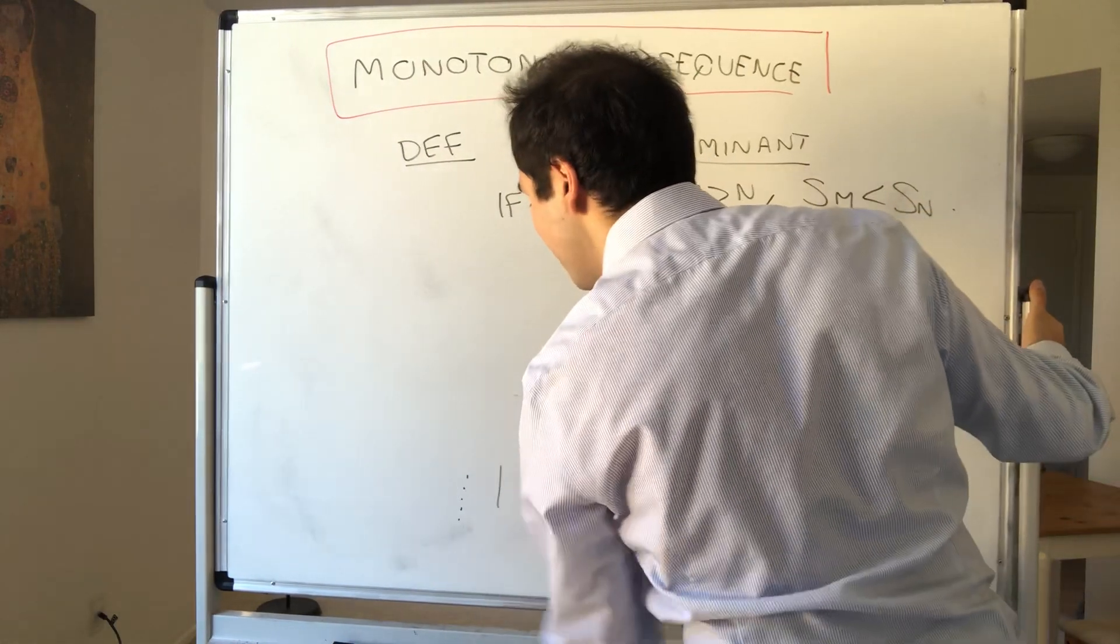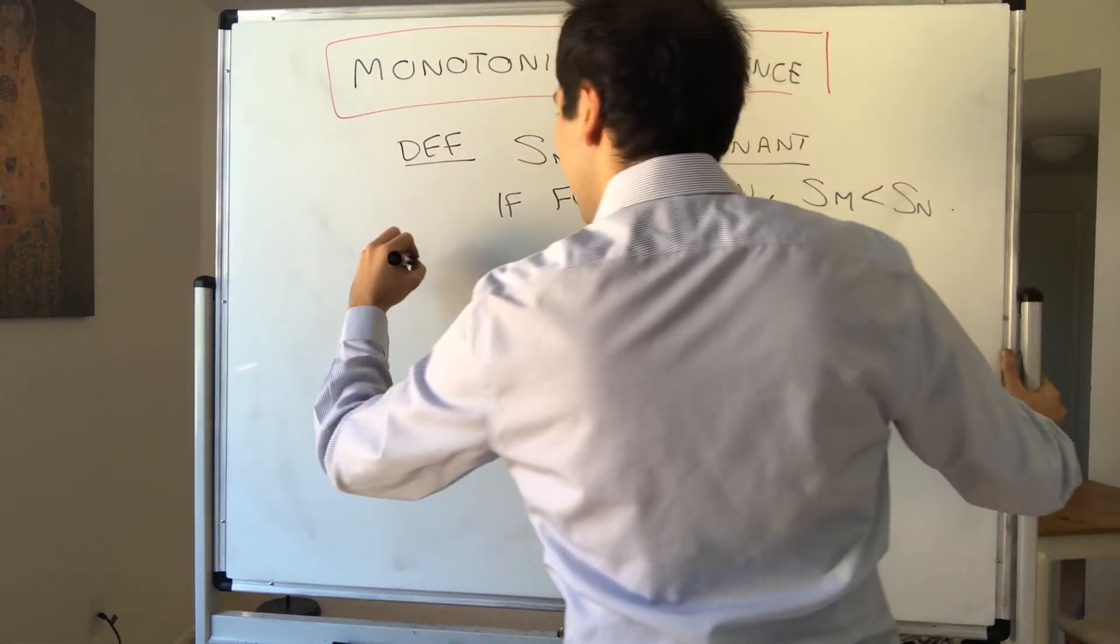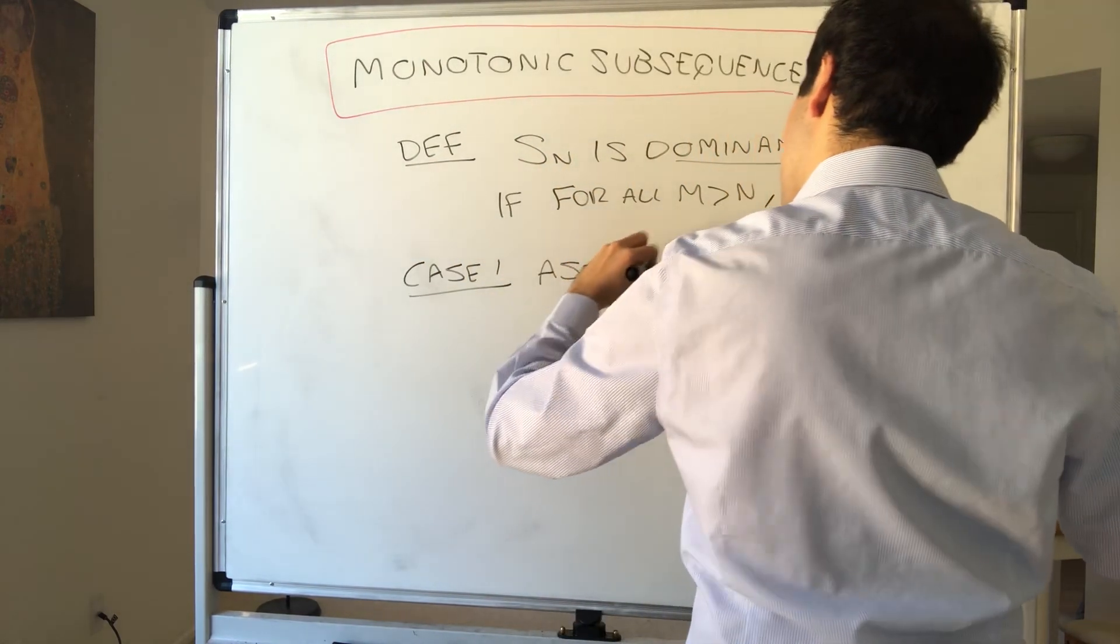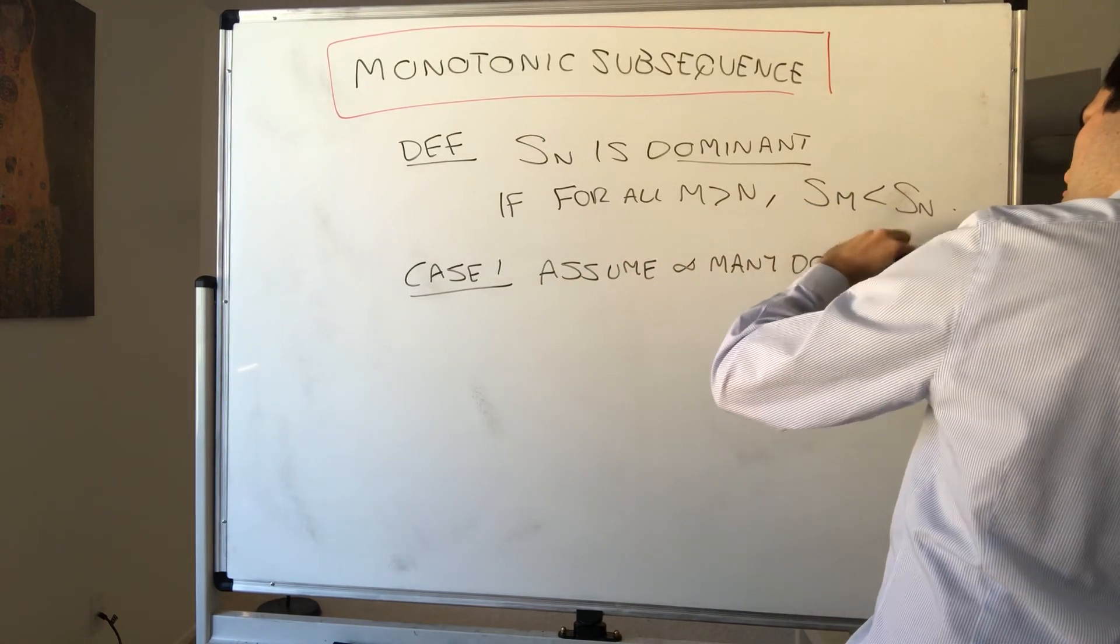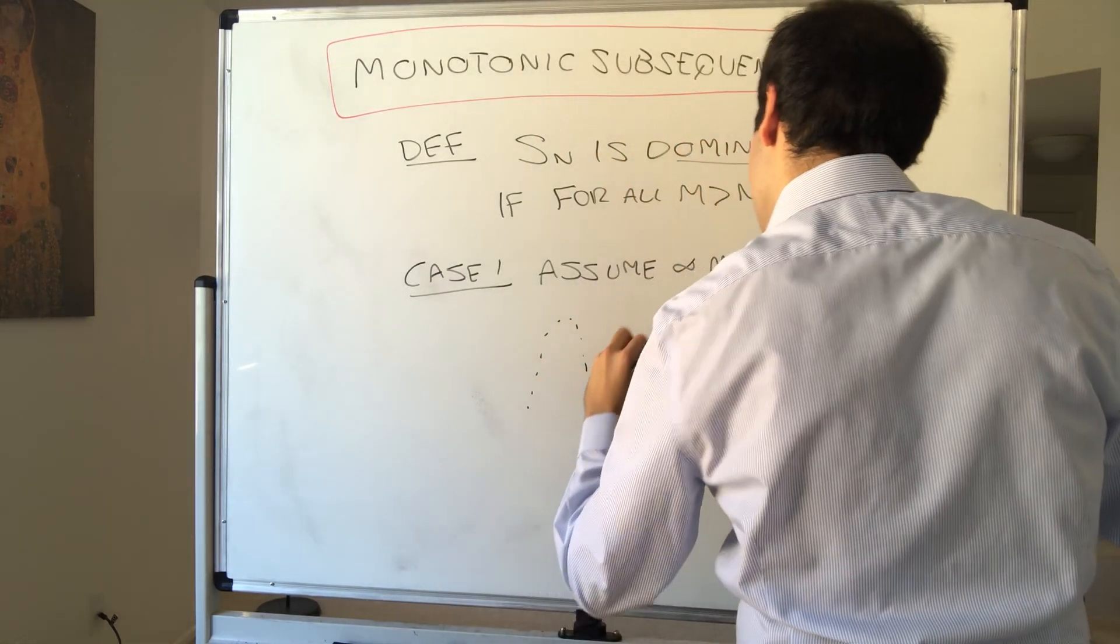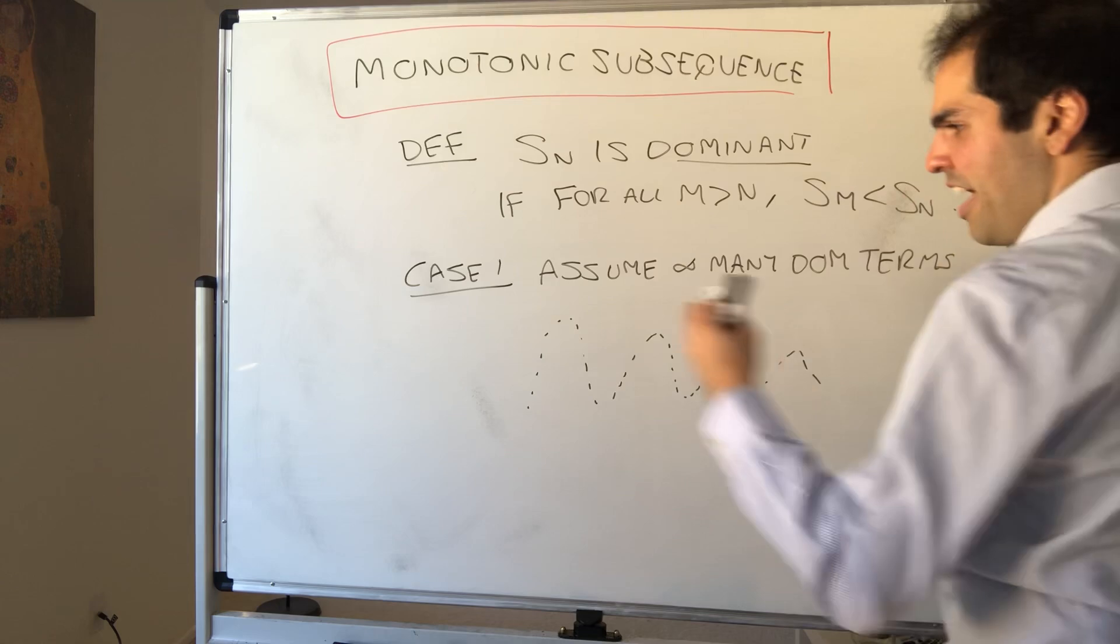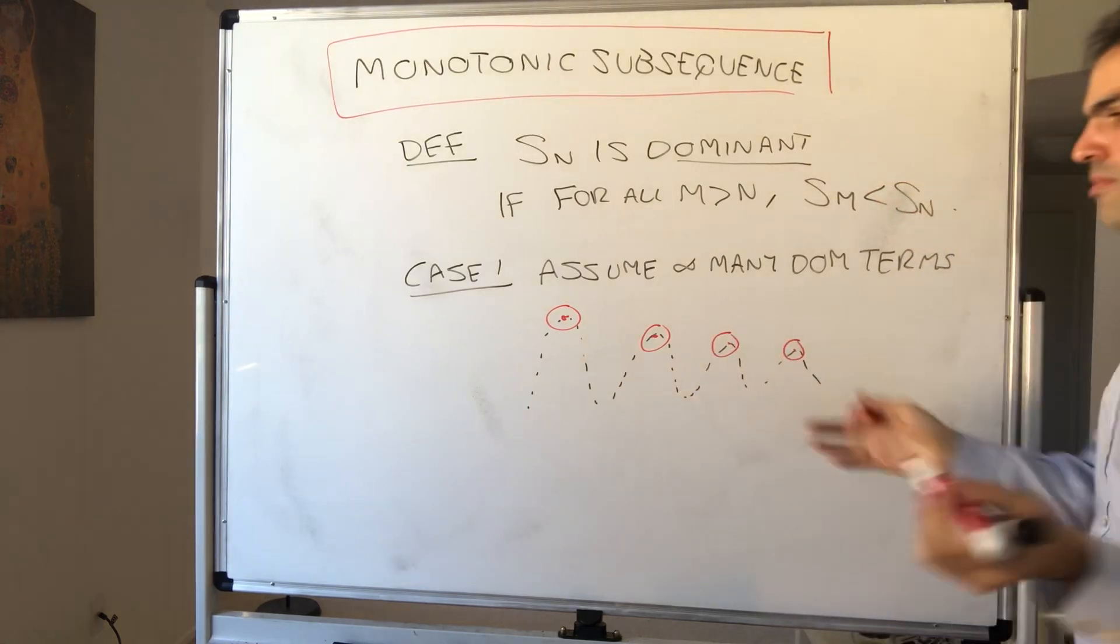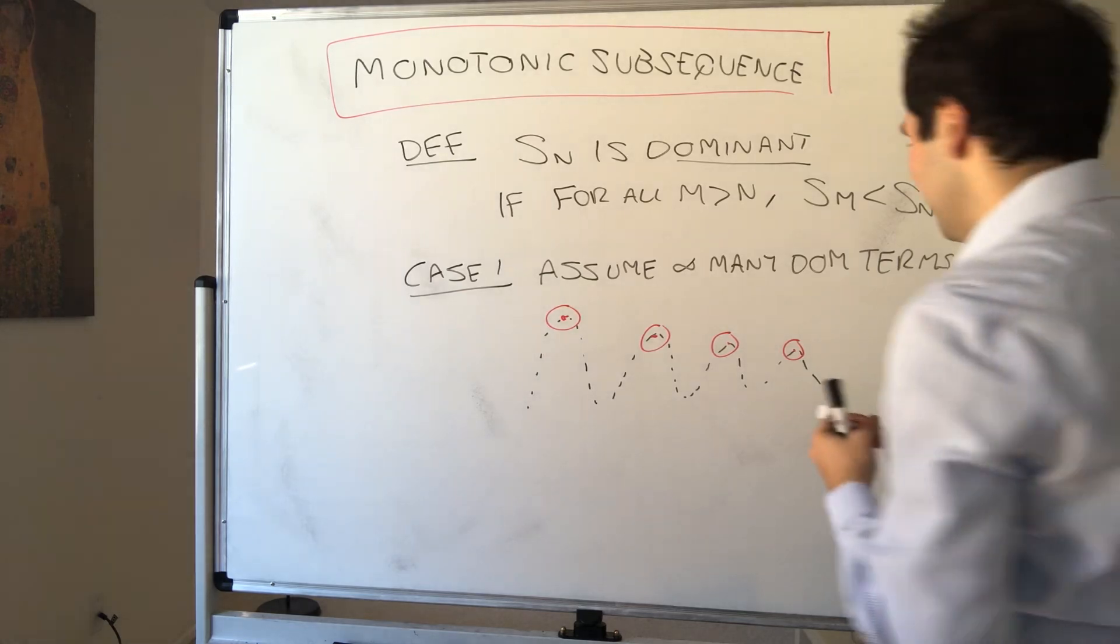And then, well, it's just a proof by cases. Suppose you have infinitely many peaks. So in case one, assume infinitely many dominant terms. Kind of think like that.